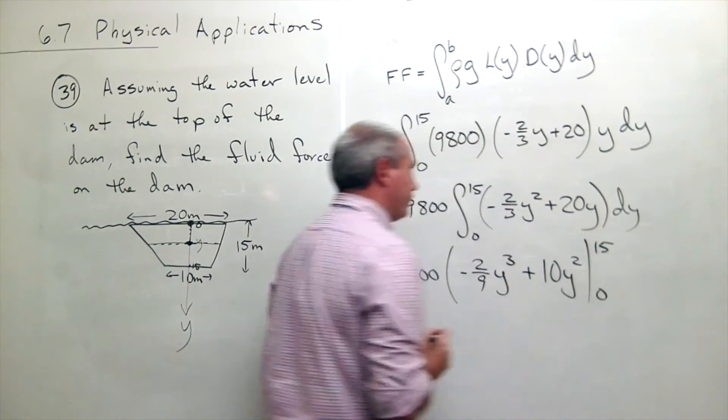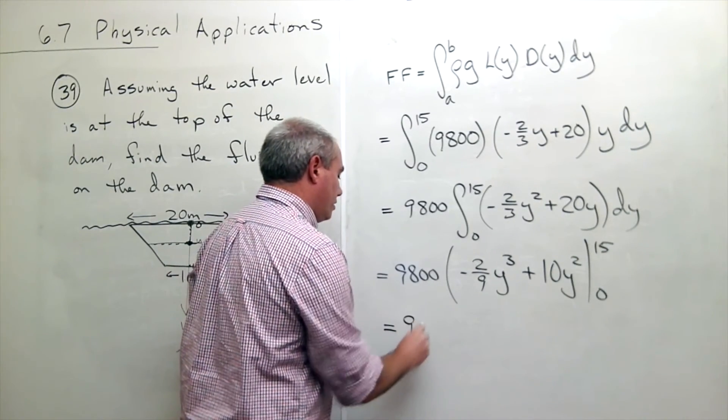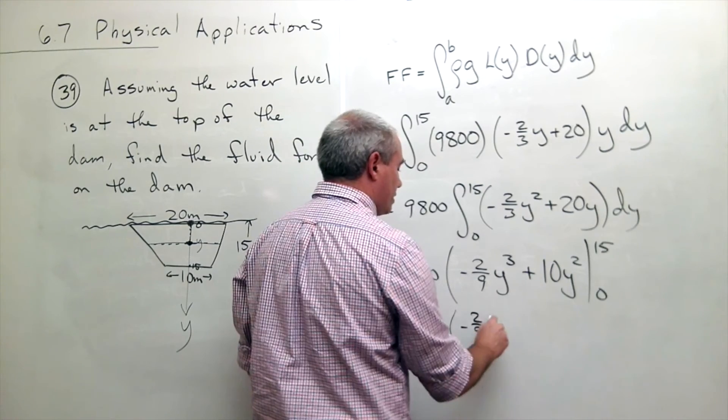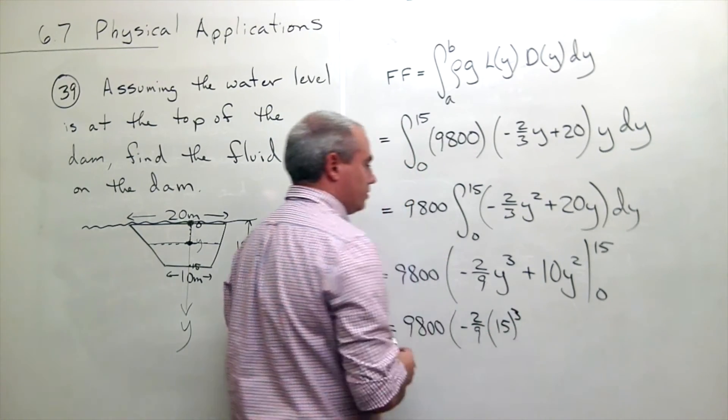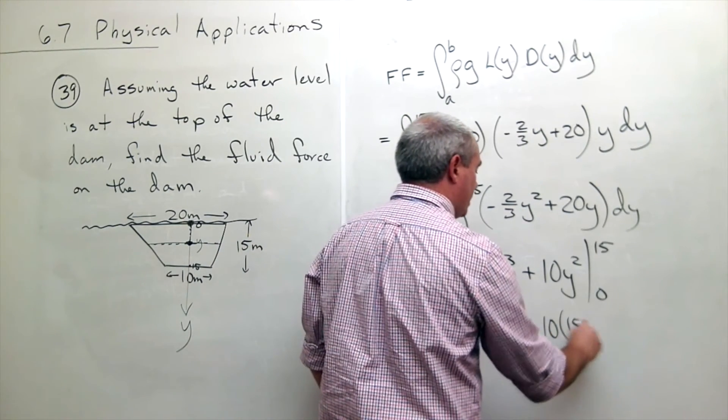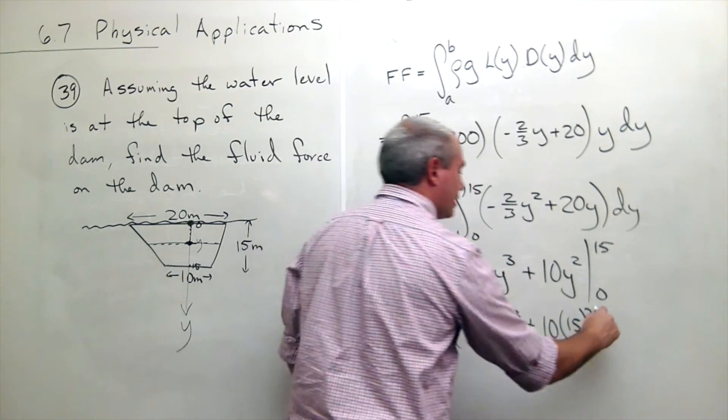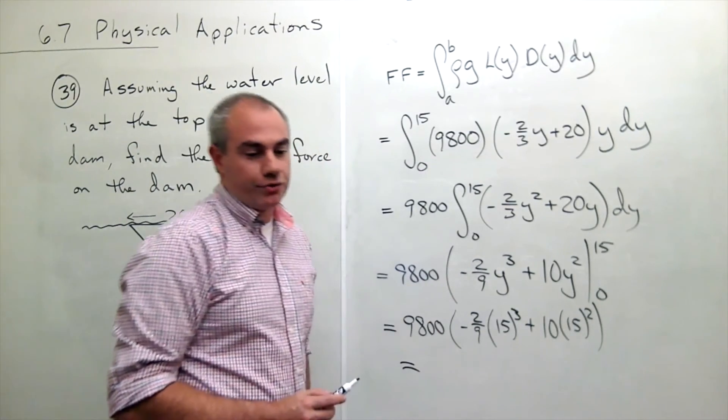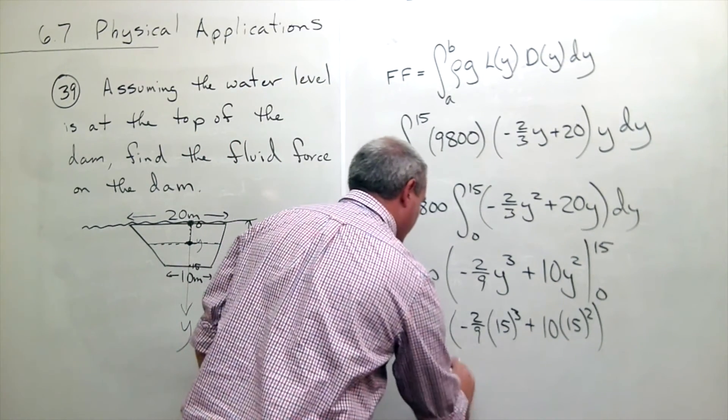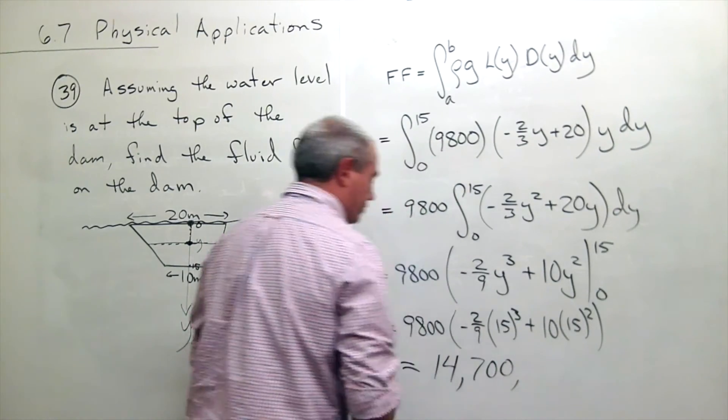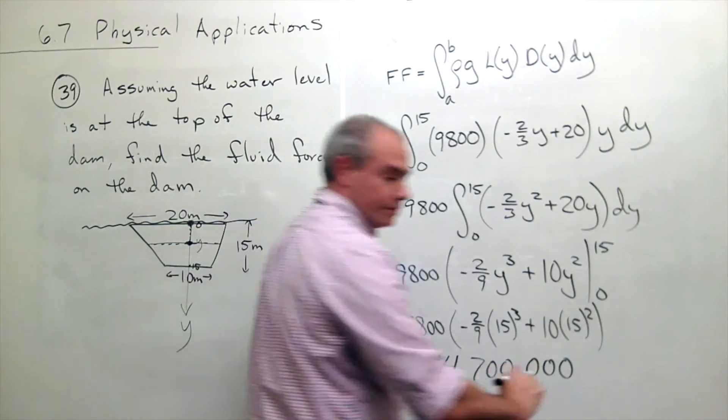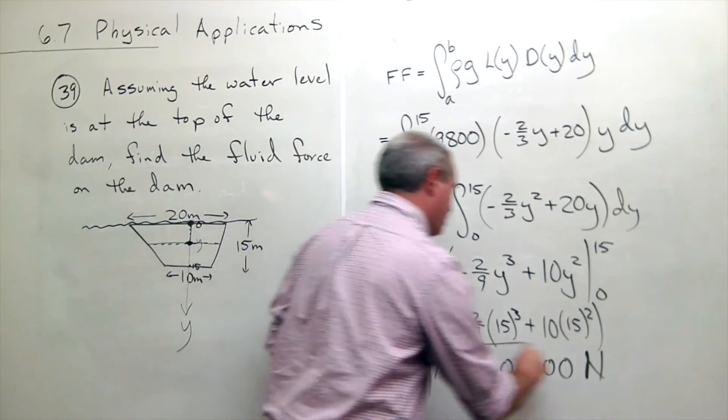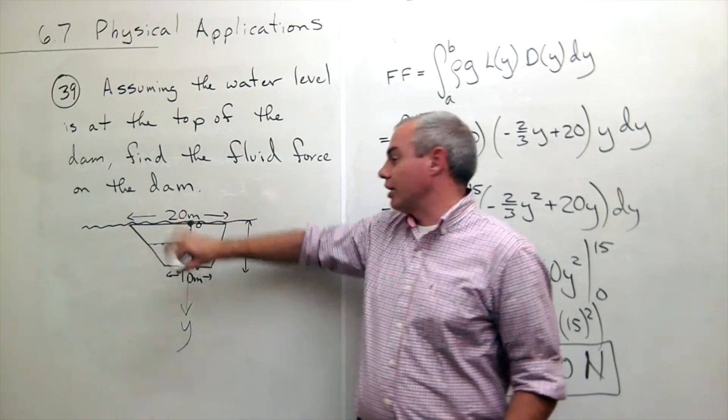So we get 9800 times negative two-ninths times fifteen cubed, and then I get plus ten times fifteen squared. And if I plug in zeroes, I get zeroes, so that's it. Plug this into a calculator and you should get an answer. And what you should come out with is something in the neighborhood of 14.7 million, and that is in newtons. So 14 million 700 thousand newtons is how much force the water would be putting on the side of this dam.